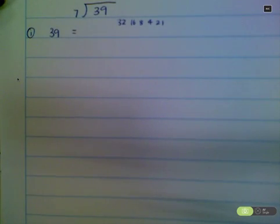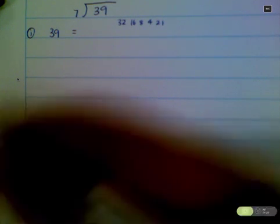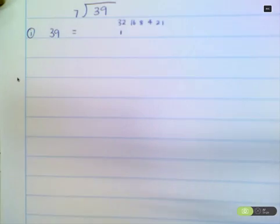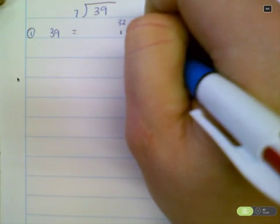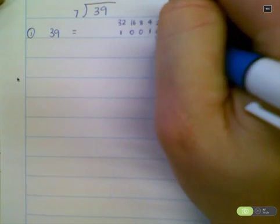I don't go up to 64, because 64 will not go into 39. So 32 will go into 39, giving us a remainder of 7. 16 won't go into 7, 8 won't go into 7, but 4 will go into 7, giving us a remainder of 3. And 2 will go in, giving us a remainder of 1. 1 will go into 1, giving us a remainder of 0.